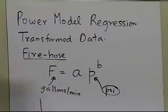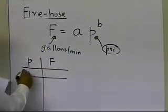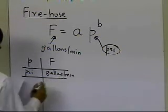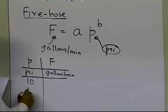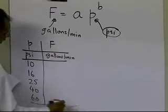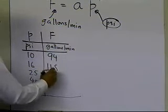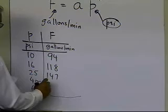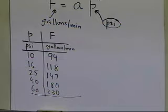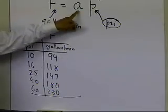This is the data given to us. We have pressure in psi and flow rate in gallons per minute. For pressures of 10, 16, 25, 40, and 60 psi, we are given five data points, and the corresponding flow rates are 94, 118, 147, 180, and 230. We're going to transform this data so that we can use the linear regression formulas to find constants a and b.